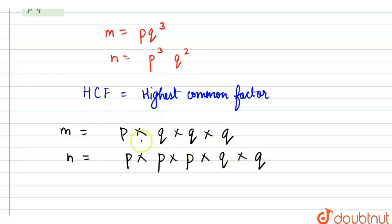So here if we want to select the highest common factor, we have 1 P and P and P common between them. Here we can make 1 pair of Q's between them, and here also we can make another pair of Q's between them.